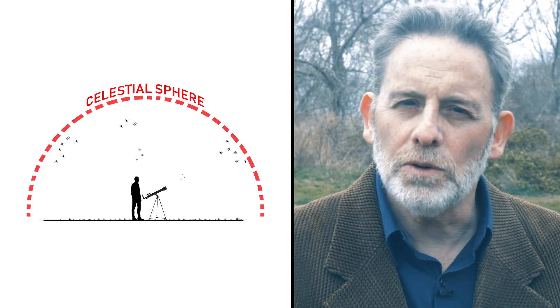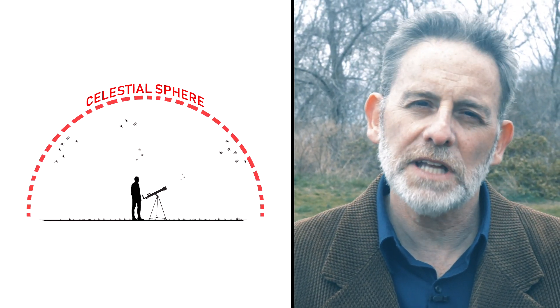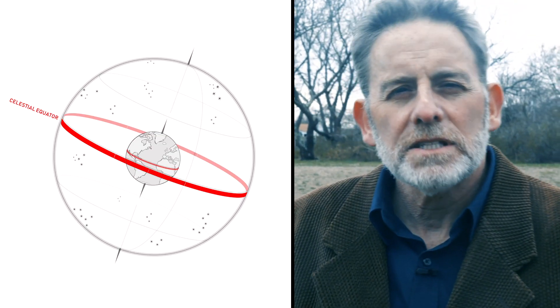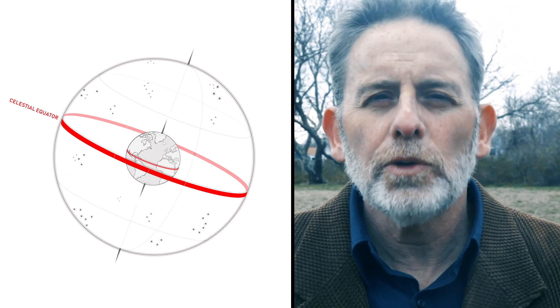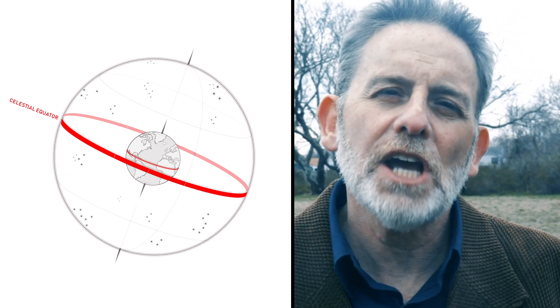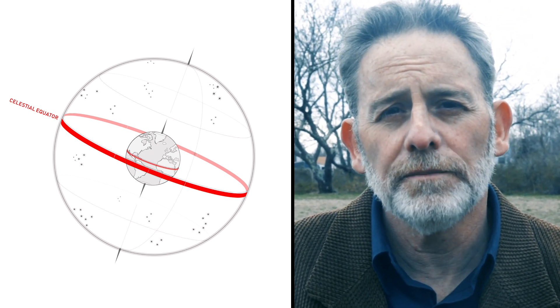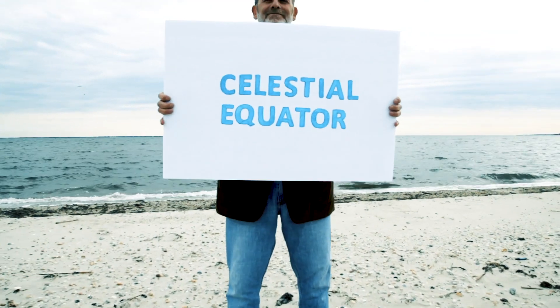Your view of the celestial sphere depends on where you're standing on Earth. The celestial equator is an imaginary circle created by projecting the Earth's equator on the celestial sphere. Because the Earth is tilted on its axis, the celestial equator and poles are also tilted.